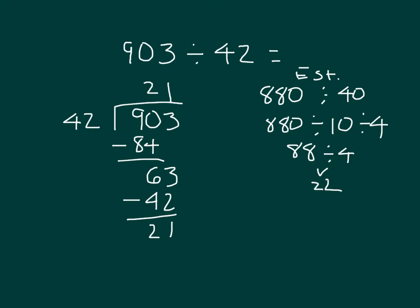However, the 21 ones, we can regroup into the tenths place. And that's where it is that I did this to my dividend here, where I added a decimal place, and I added a 0. Now my dividend was 903 before, now it's 903 and 0 tenths, where it is that that dividend still has the same value.